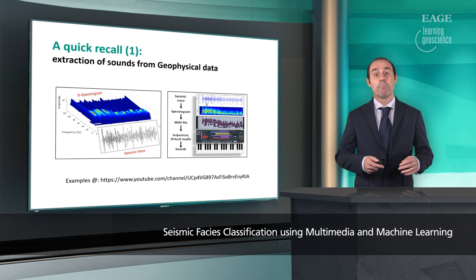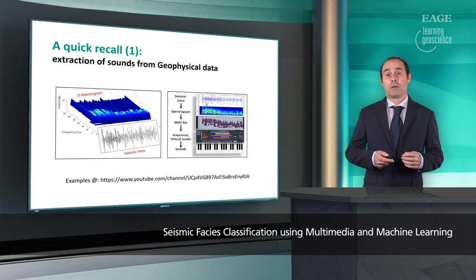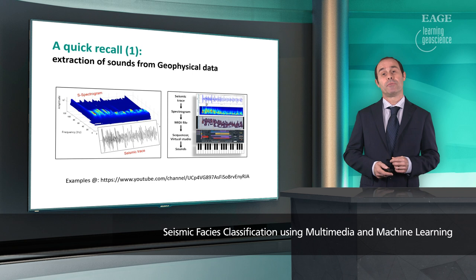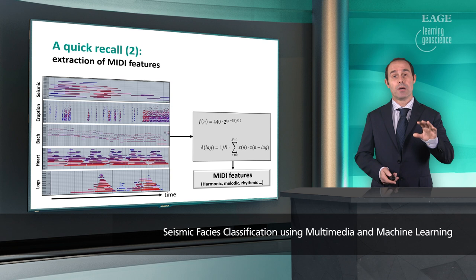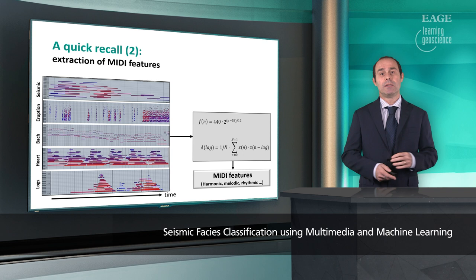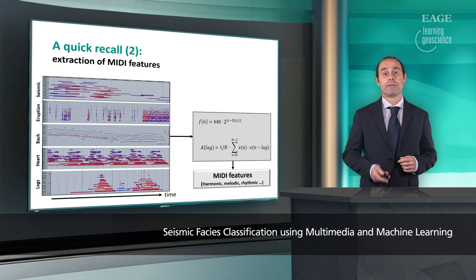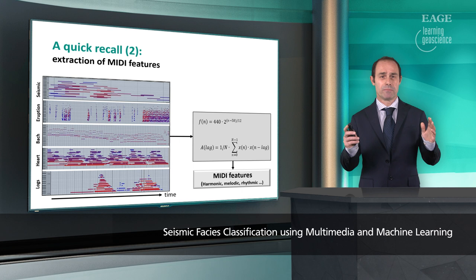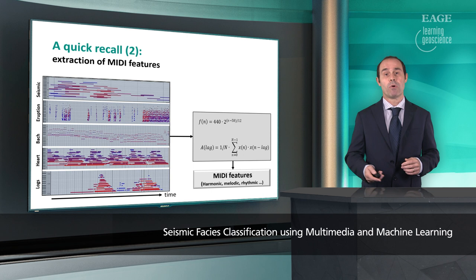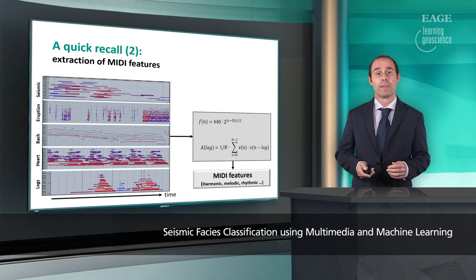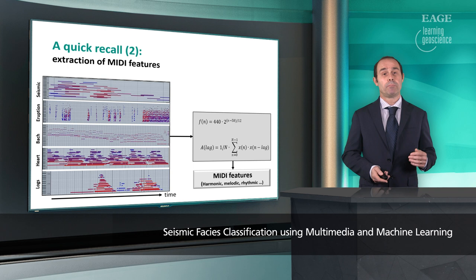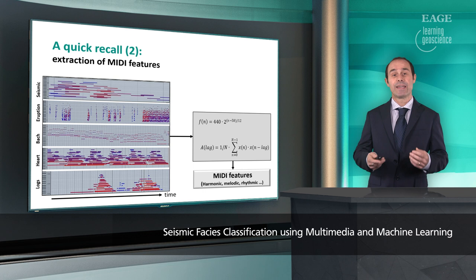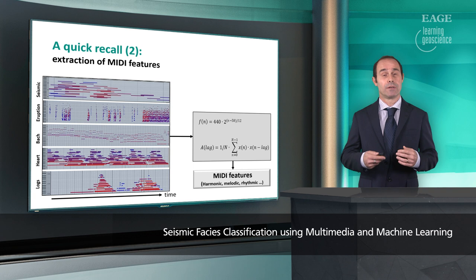We can play these digital sounds using a sequencer, a typical software that interprets MIDI files. Here we have five examples of different types of MIDI displays. We can create MIDI files from every type of time series data. In the upper panel, we have seismic data and its corresponding MIDI display. On the horizontal axis we have time, proportional to the travel time of the seismic data, and on the vertical axis we have pitch, which is related to frequency. In colors we have sound intensity, related to the amplitude of the seismic data.